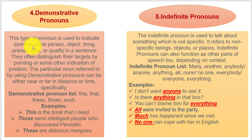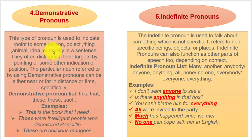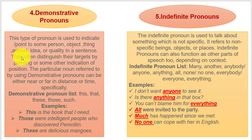The definition: this type of pronoun is used to indicate or point to some person, object, thing, animal, idea, or quality in a sentence. In short, they point out nouns, they indicate nouns, they show nouns. They distinguish their targets — they separate and make something quite different from the others by pointing or some other indication of position.